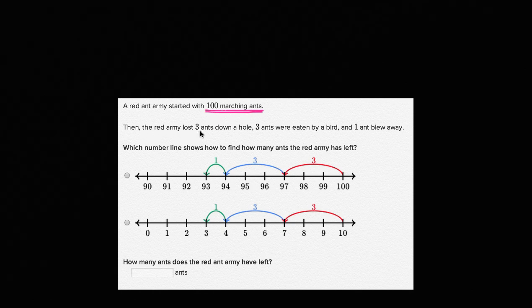Started with 100 marching ants. Then the red army lost three ants down a hole. Three ants were eaten by a bird. That's unfortunate. And one ant just blew away. I guess ants are fairly light creatures, so that makes sense. Which number line shows how to find how many ants the red army has left?